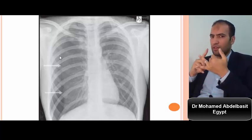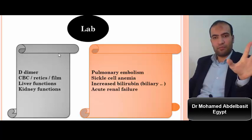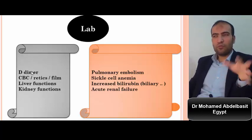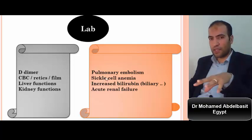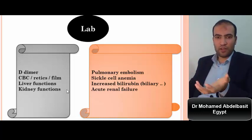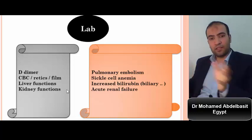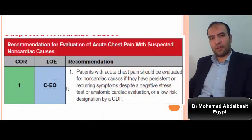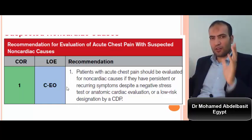Lab investigations: D-dimer can be elevated in pulmonary embolism. CBC and blood film can detect sickle cell anemia. Liver function tests and elevated bilirubin raise concern about biliary causes. Kidney function tests detect acute renal failure and uremic pericarditis. You have to rule out cardiac causes first, then proceed to non-cardiac causes.